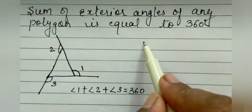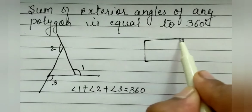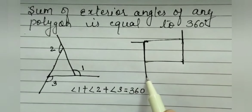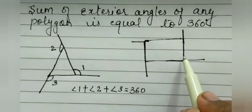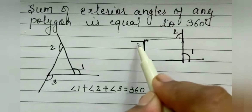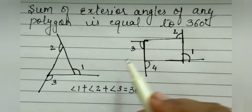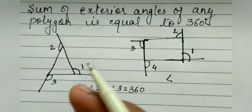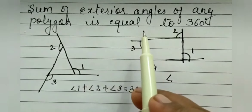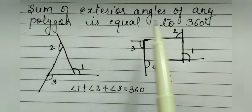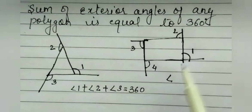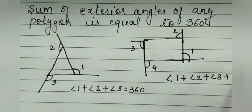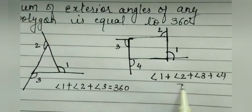Here I am making one quadrilateral and again extending each side in the same order, giving four exterior angles: angle 1, angle 2, angle 3, and angle 4. This polygon could be a pentagon, a hexagon, a quadrilateral, or a triangle — in all polygons this property holds. The sum of exterior angles of any polygon is equal to 360 degrees, so angle 1 plus angle 2 plus angle 3 plus angle 4 equals 360 degrees.